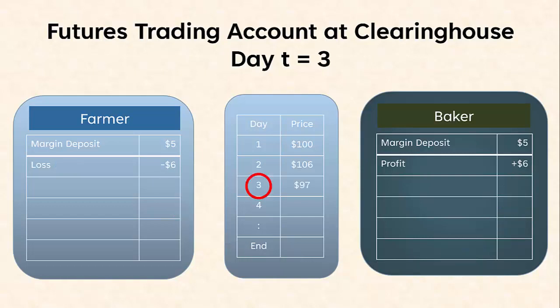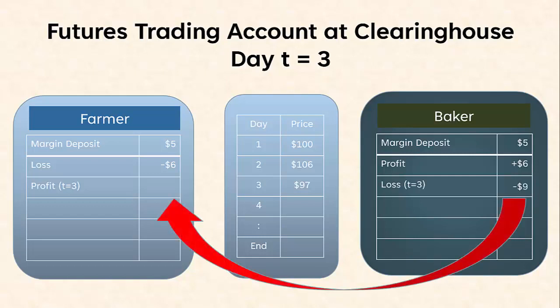On day T=3, the futures settles at a price of $97. The difference between $106 and $97 is $9. Compared to the first day, we've had a reversal of fortunes. The baker has lost and the farmer has now profited by $9. The Clearinghouse takes $9 from the baker's account and transfers it to the farmer's account.